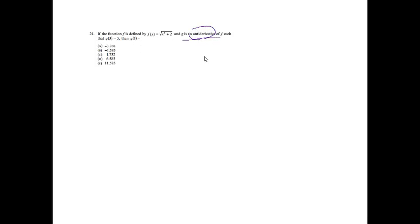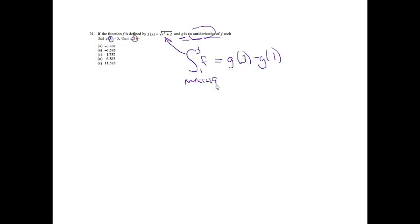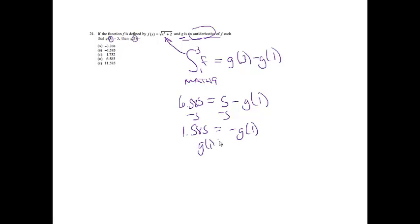Number 21. f(x) equals the cube root of x cubed plus 2, and g is an antiderivative of f such that g(3) equals 5, find g(1). Since g is the antiderivative of f, the integral from 1 to 3 of f equals g(3) minus g(1). Using math 9 on the calculator, the integral evaluates to 6.585. So 6.585 equals 5 minus g(1). Subtracting 5 from both sides gives 1.585 equals negative g(1), so g(1) equals negative 1.585, which is option B.